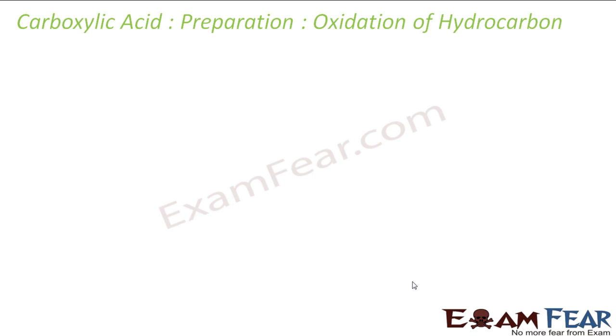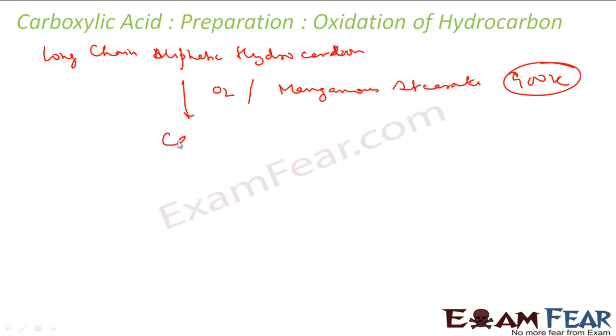The next is oxidation of hydrocarbons. So we can also prepare carboxylic acid by oxidation of hydrocarbon with a very high temperature. So you take a very long chain aliphatic hydrocarbon and then you use catalyst manganese stearate also with a very high temperature 400 Kelvin and you need oxygen, you will get carboxylic acid. There is no reaction mechanism for this, but it is something like this. You have this long chain aliphatic hydrocarbon to react in the presence of oxygen and use manganese stearate as a catalyst at a very high temperature maybe 400 K. What you get is carboxylic acid.